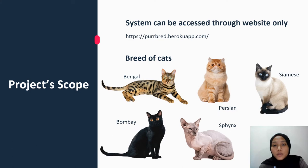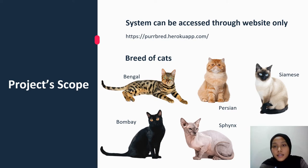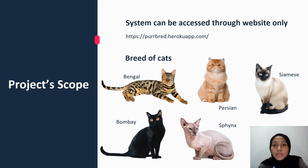My scope for this project includes that the system can only be accessed through a website using laptops or smartphones. Other than that, as of now, there are only five breeds of cats that the system can classify, which are Bengal, Persian, Siamese, Bombay, and Sphinx.